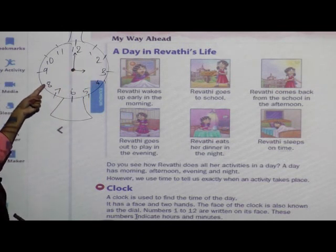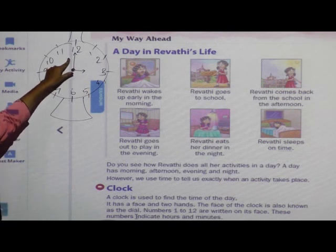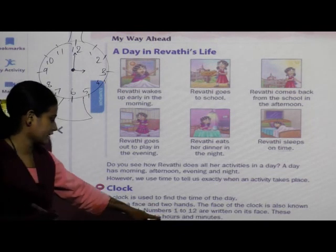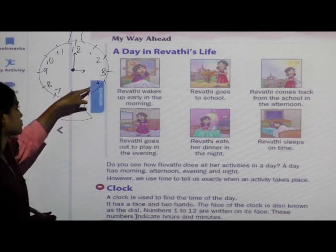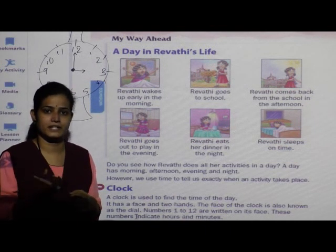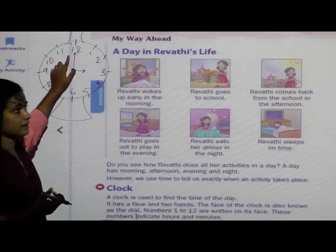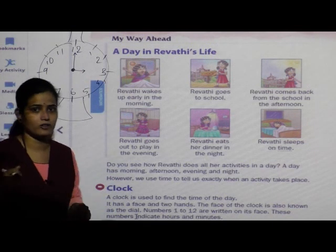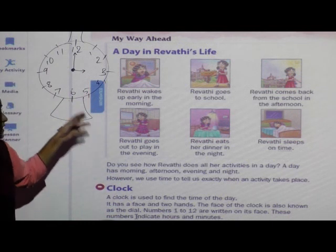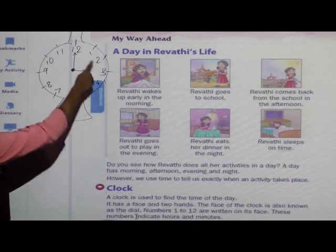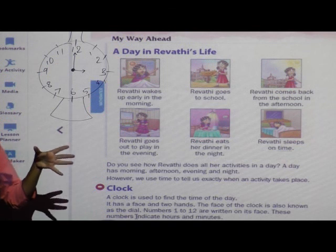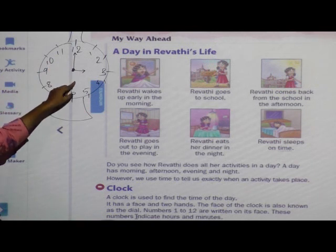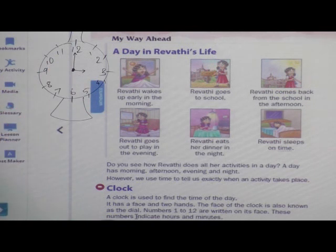Here, you can see all the numbers — they start from 1 till 12. These numbers indicate hours and minutes. Minutes is shown by the long hand, and hours is shown by the short hand. This is the clock — this is its face. The face is also called the dial. And these are the two hands: the long one is the minute hand, and the short one is the hour hand.